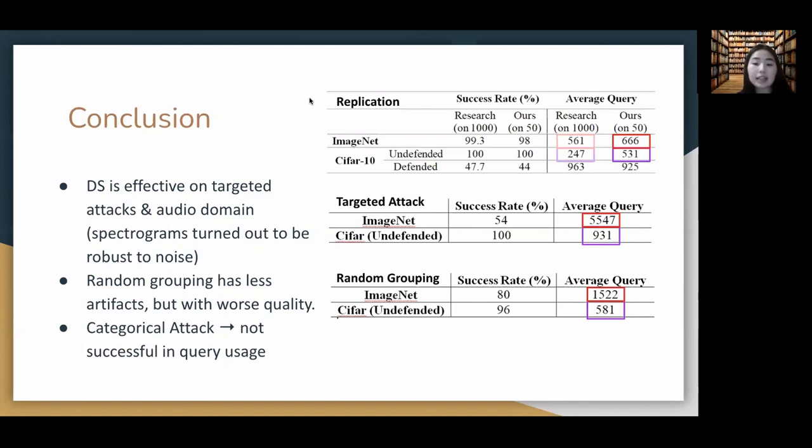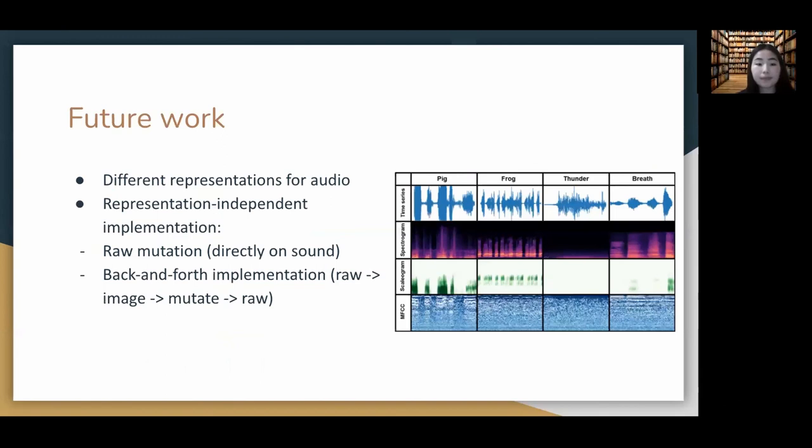Secondly, random grouping has less artifacts, but it produces worse quality images. And lastly, categorical attacks are not quite successful in query usage.